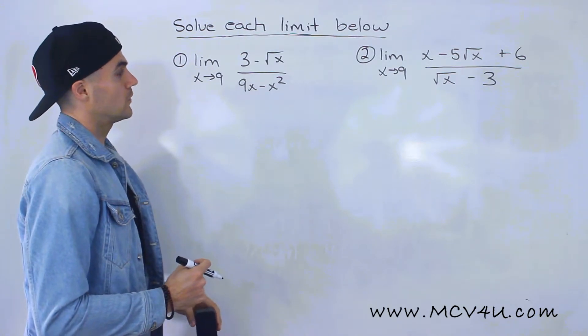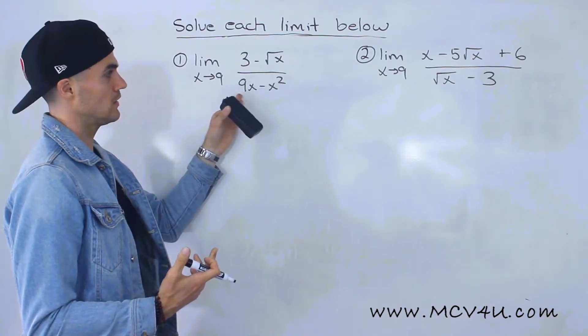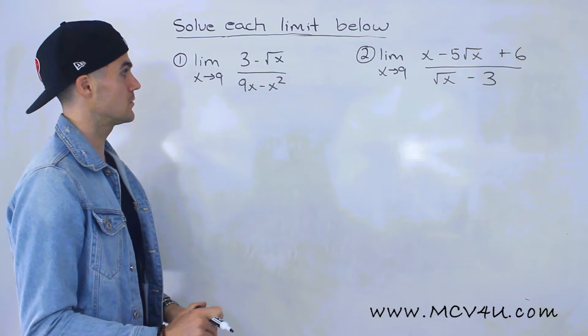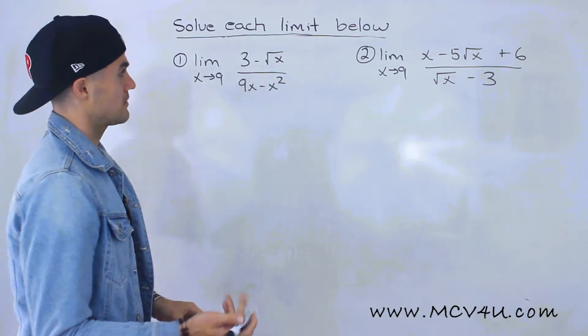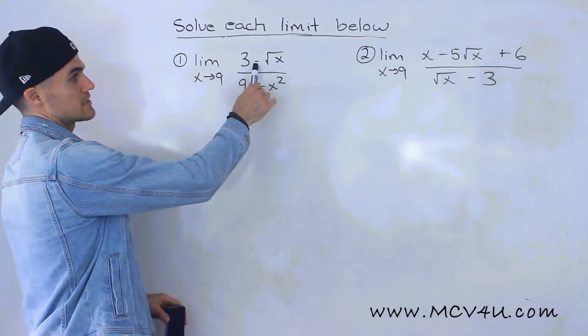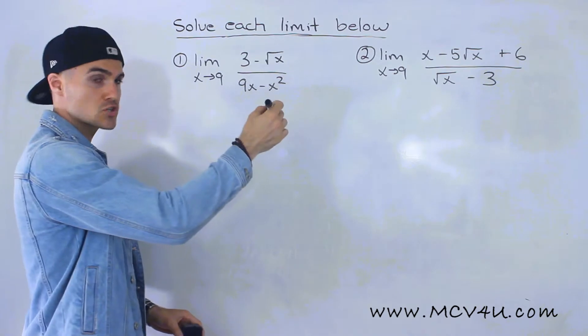We'll need to figure out some other method. For this one, I'll show you three different methods. The first method is rationalization. You would rationalize this numerator here. Usually, you're rationalizing wherever there's a square root.